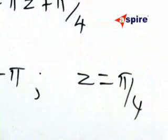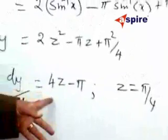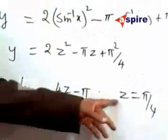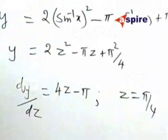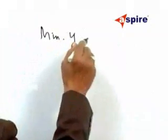If we take the second differentiation, you will be having 4 which is positive, therefore it is a minimum when z is equal to π by 4.